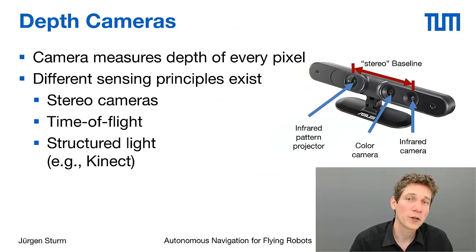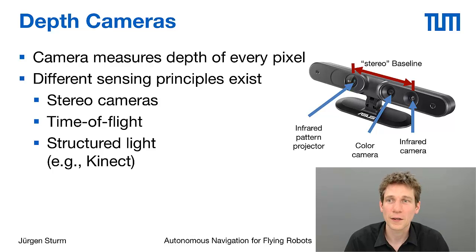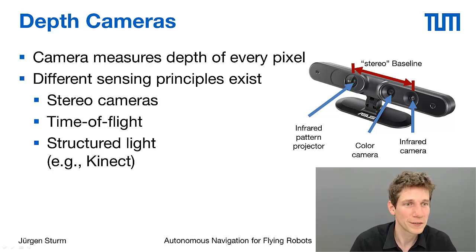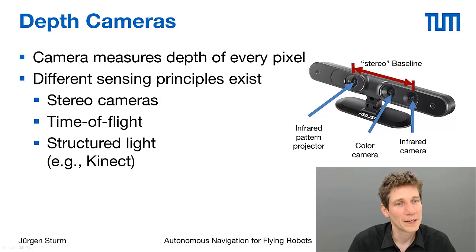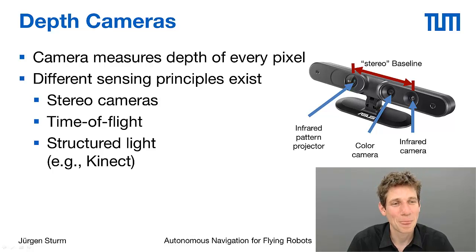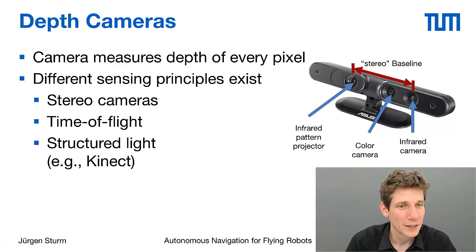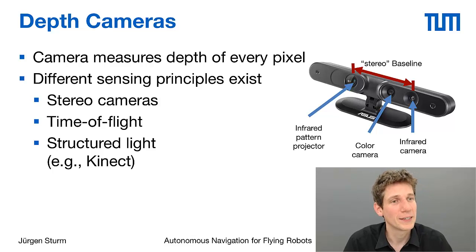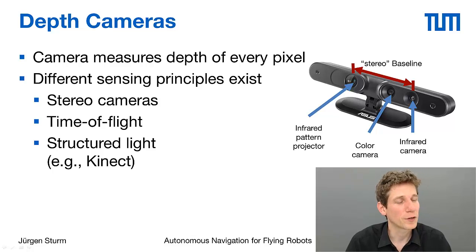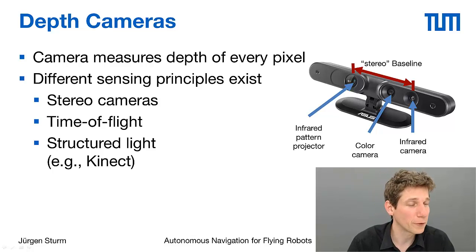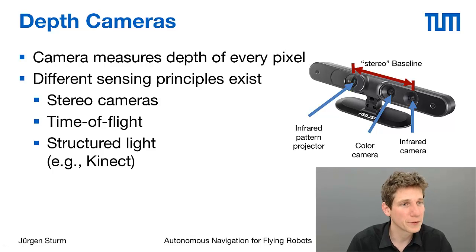To give you a brief outline of what depth cameras are and how they work: this is how the ASUS camera looks like. It consists of two cameras — an infrared camera and a color camera. The infrared camera looks at the scene and sees both a normal infrared image and a dot pattern projected by the sensor itself from a slightly different location. This pair of infrared pattern projector and infrared camera forms a stereo baseline, which gives us the possibility to compute the depth of every pixel.